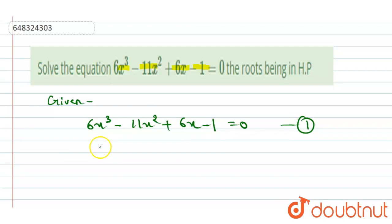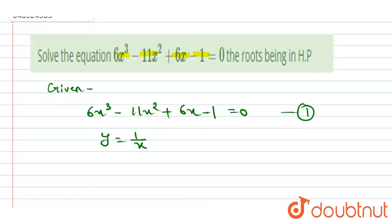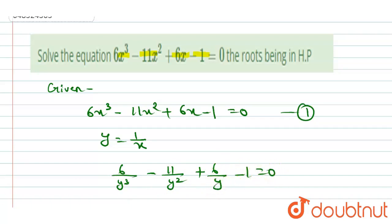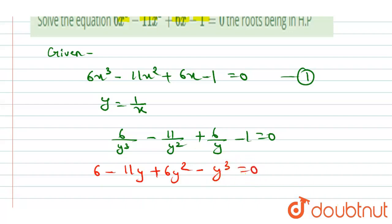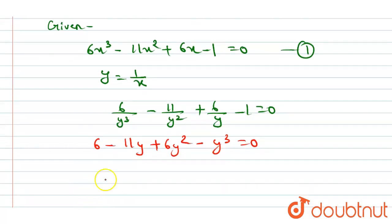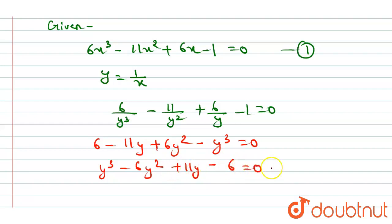Next, we will place y = 1/x. Substituting this, we get 6/y³ - 11/y² + 6/y - 1 = 0. On further solving, we get 6 - 11y + 6y² - y³ = 0. Rearranging, we can write: y³ - 6y² + 11y - 6 = 0. This is our second equation.